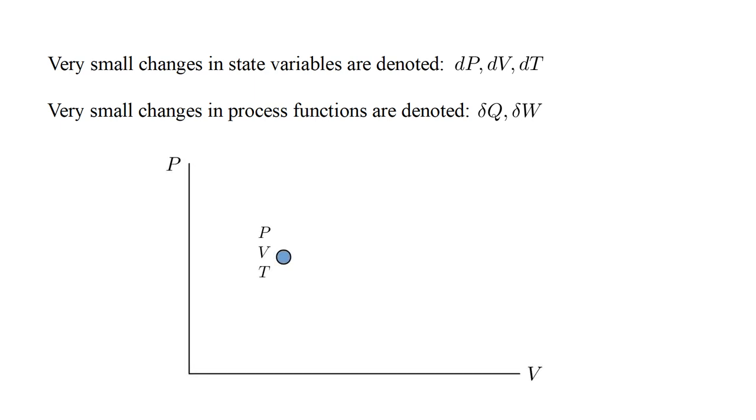So starting at a state with pressure, volume, and temperature PV and T, we might move to a nearby state with values P plus dP, V plus dV, and T plus dT. And the process that caused this change of state might have involved adding heat delta Q to the gas and doing work delta W on it. A different process could move us between these two states along a different path, characterized by different values of the process functions.